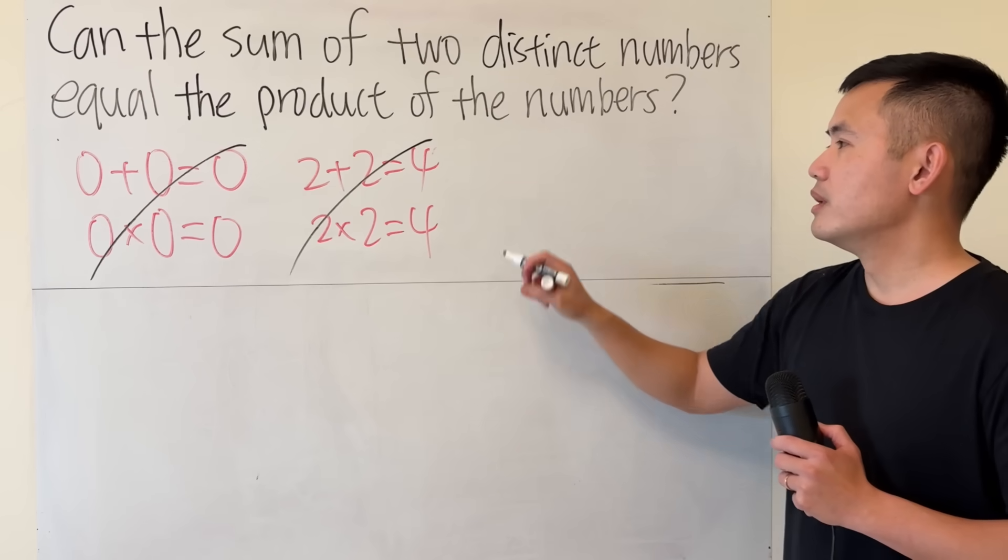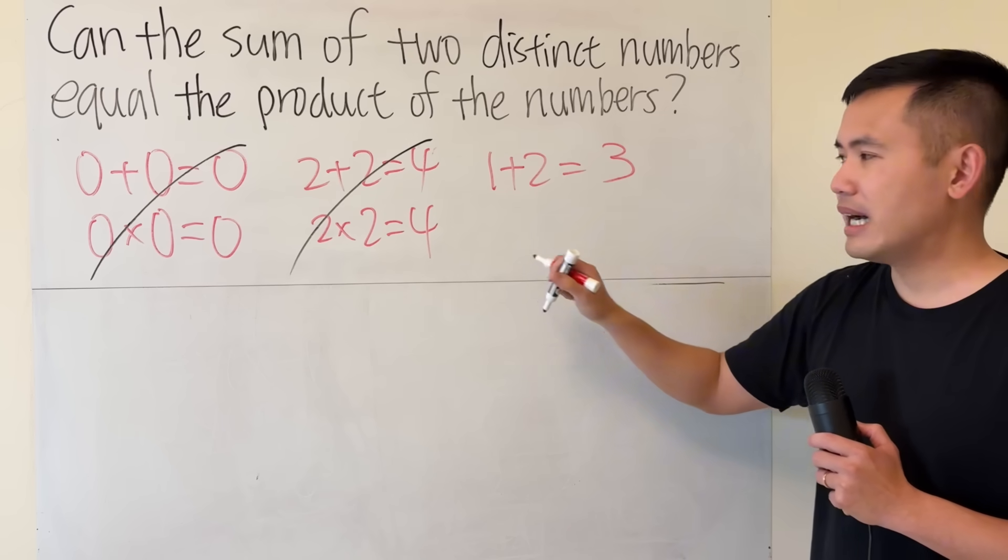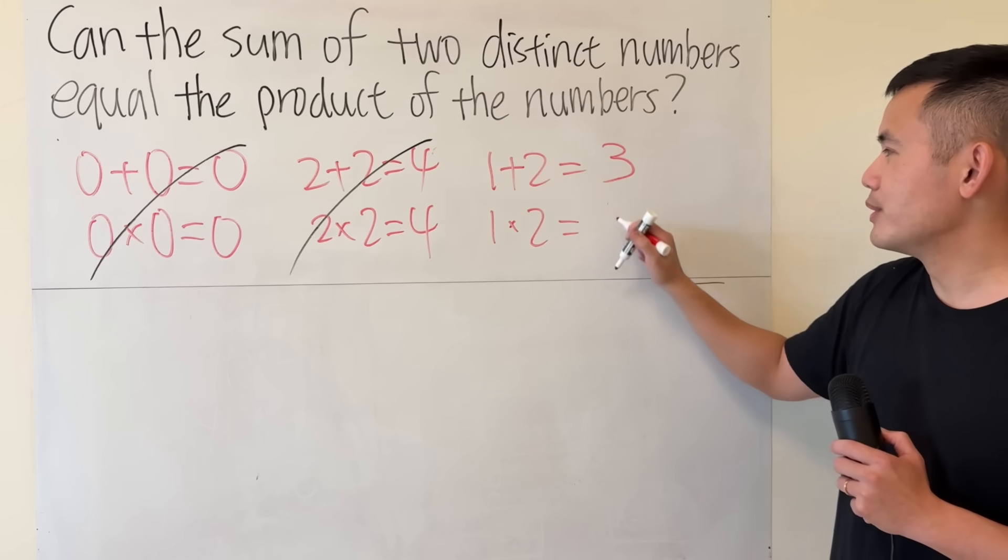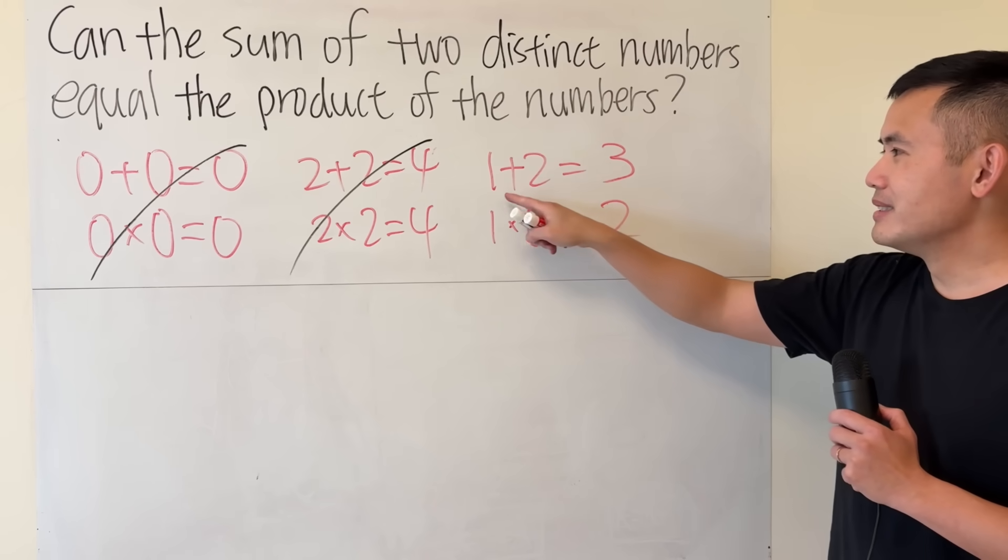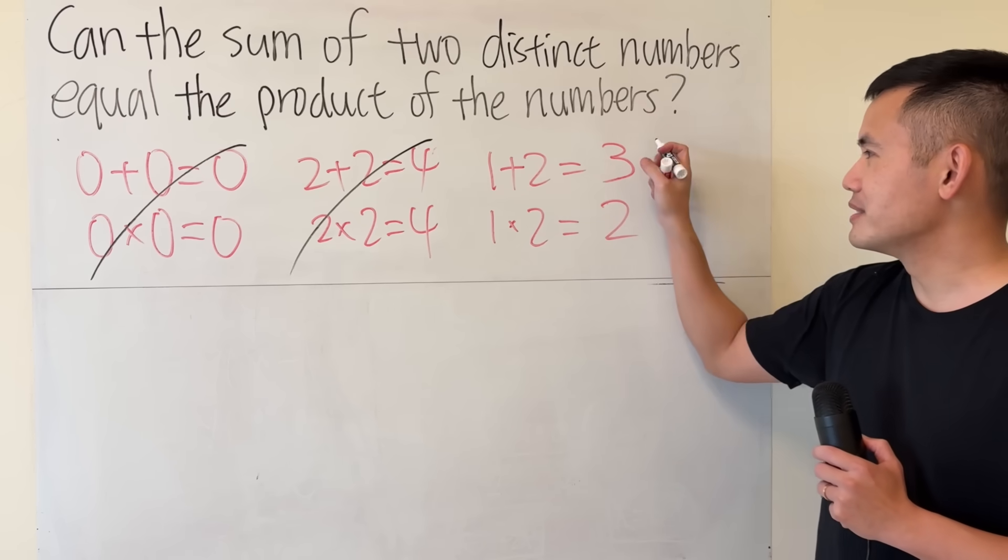How about 1 and 2? If we have 1 plus 2, that is 3. But 1 times 2, that is 3. No, just kidding, it's 2. Two different numbers, but this and that are not equal, so this is not what we want either.